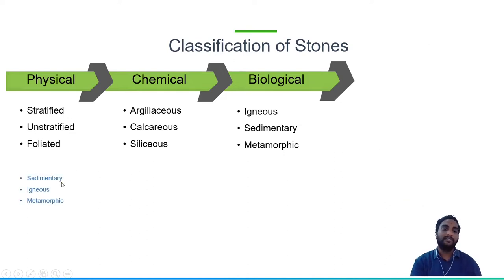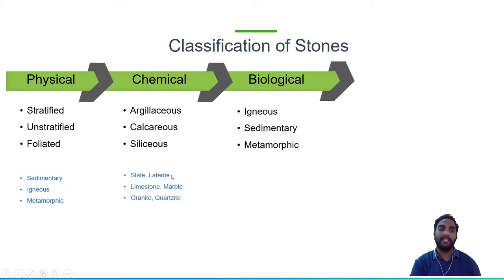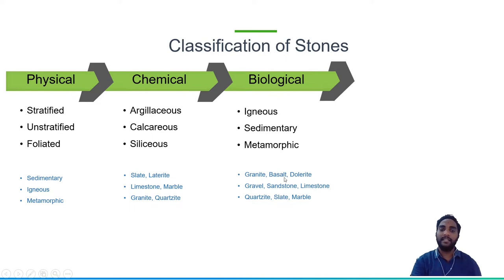Sedimentary rocks are examples of stratified rocks; igneous rocks are examples of unstratified rocks; and metamorphic rocks are examples of foliated rocks. For chemical classification: argillaceous rocks include slate and laterite — both having alumina as highest content. Limestone and marble have calcium as highest content. Granite and quartzite have silica as highest content. For geological classification: igneous rocks include granite, basalt, and dolerite; sedimentary rocks include gravel, sandstone, and limestone; metamorphic rocks include quartzite, slate, and marble. Igneous and metamorphic are the strongest rocks, while limestone is used in cement manufacturing.